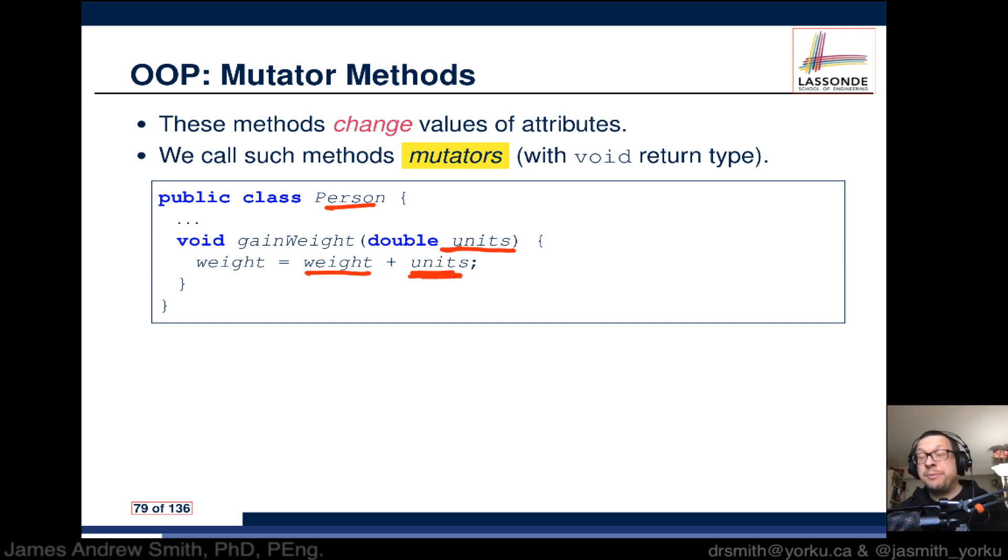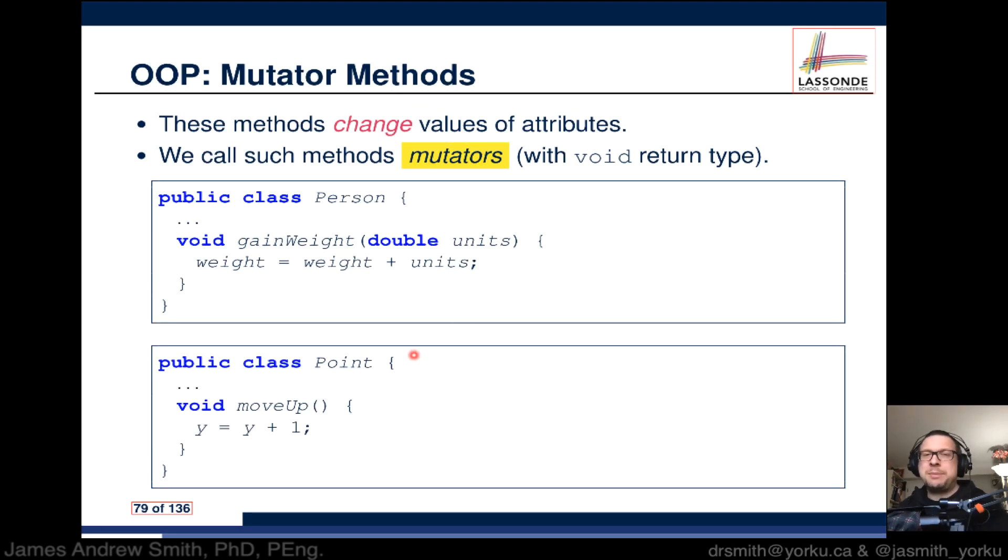It changes the person, it changes the object, it mutates the object. Here's another example for the class Point. We've got a method with a void return type called moveUp. We don't have any input parameter, but basically it's move up by one. We update the internal attribute for this class by a value of one every time we call the method moveUp. We're basically changing an internal characteristic, an internal attribute.